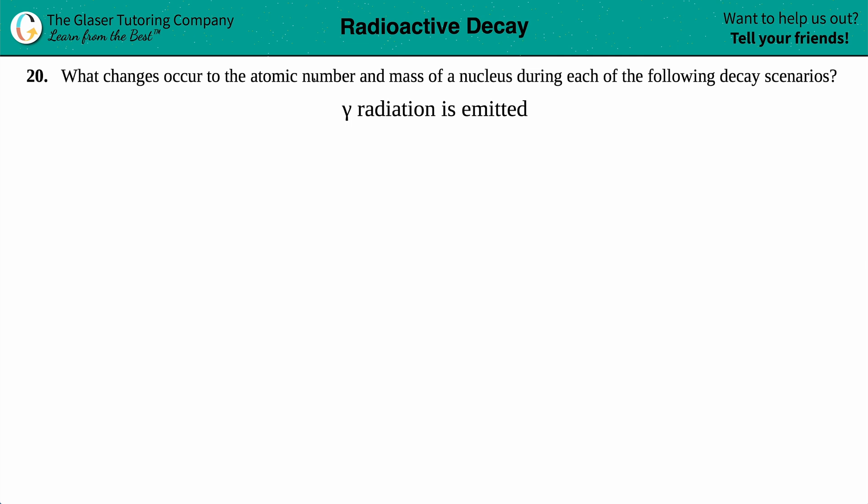Number 20. What changes occur to the atomic number and the mass of a nucleus during each of the following decay scenarios? And then we have a gamma ray is being emitted. So gamma radiation is emitted.